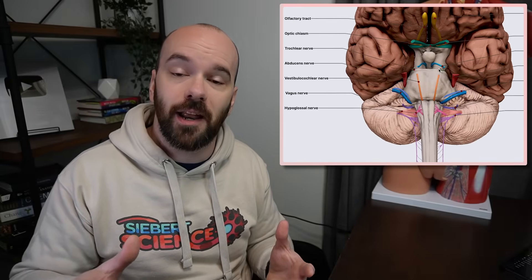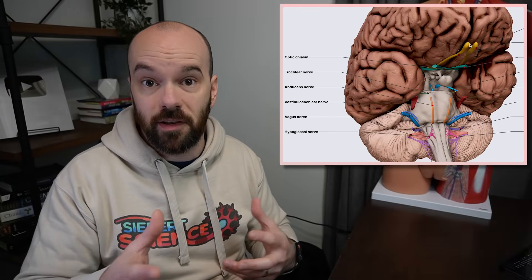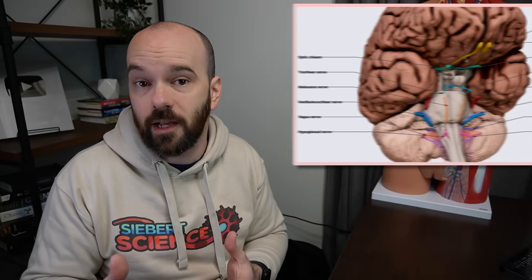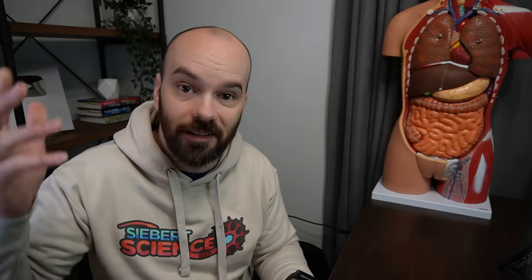We'll use some 3D models from Anatomy.app to help us visualize what these nerves look like and what they connect to. And if you're learning all of the nervous system, check out my two-part study guide that organizes all this information for you and helps you get ready to pass that test or class that you have.